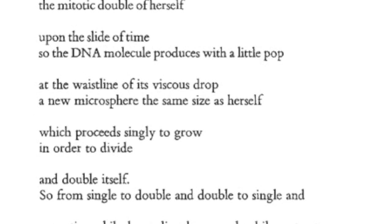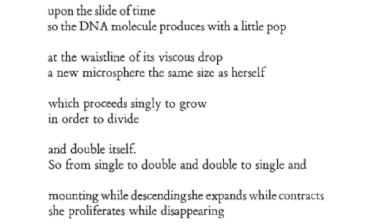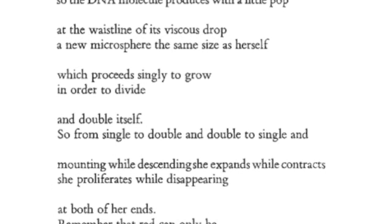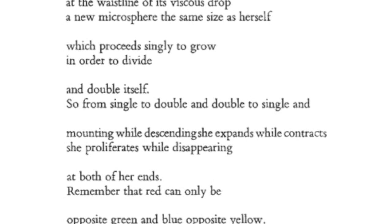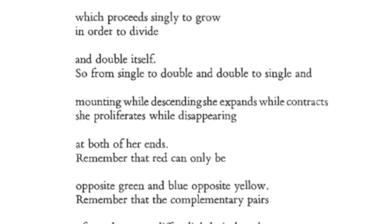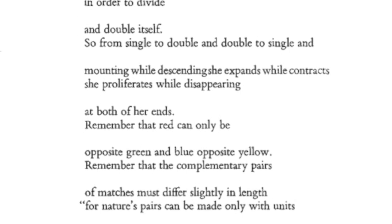The new microsphere is the same size as herself, and proceeds singly to grow in order to divide and double itself. So from single to double and double to single — mounting while descending, she expands while she contracts, she proliferates while disappearing at both of her ends. Remember that red can only be opposite green, and blue opposite yellow; the complementary pairs of matches must differ slightly in length.